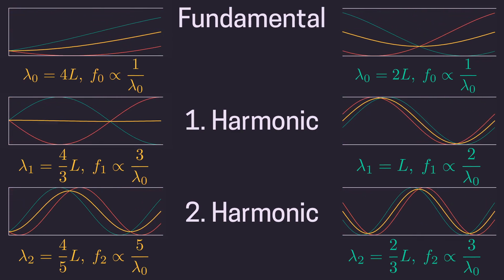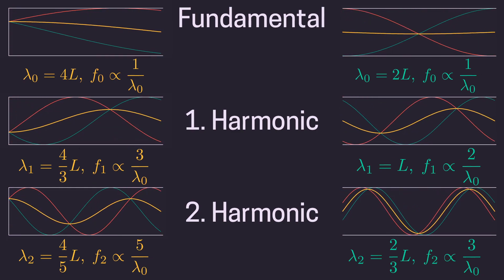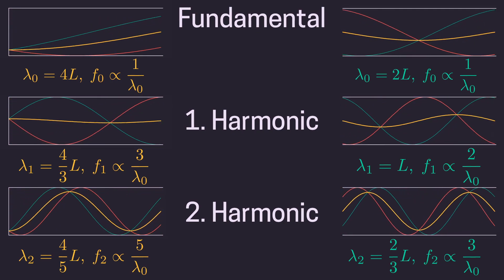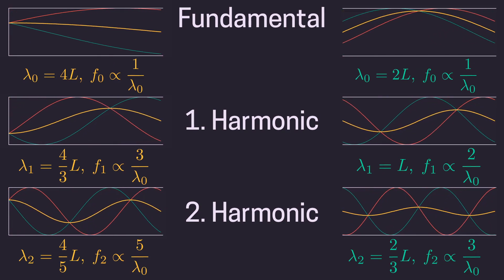Compare this to the open pipe. Here we get all the harmonics. 2 times, 3 times, 4 times the fundamental. These are the harmonics of the saxophone.